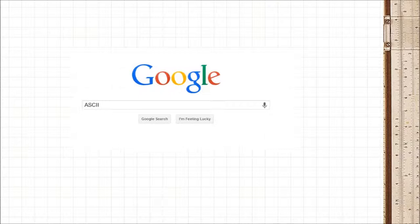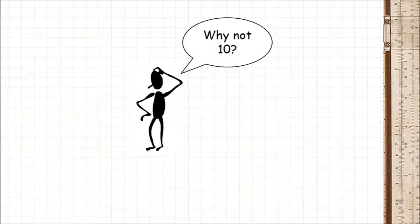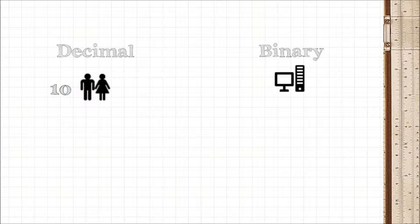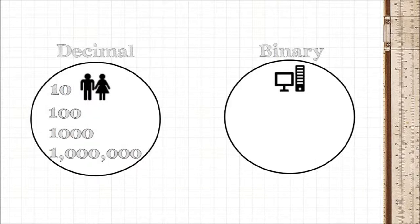You may be wondering, why 8 bits? Why not 10 or 100? You see, while 10 makes sense to humans because we use decimal digits, it makes no sense to computers because they use binary. Just like how powers of 10 make sense to you, like 10, 100, 1000, or a million, in the binary world where a computer operates, things make more sense in powers of 2.